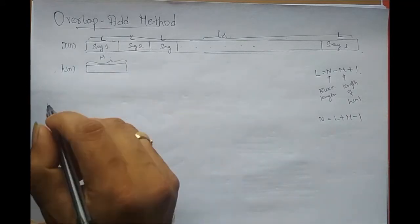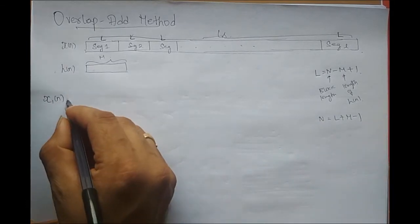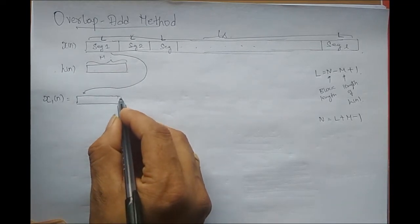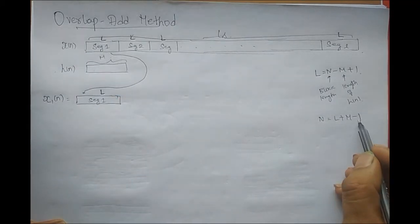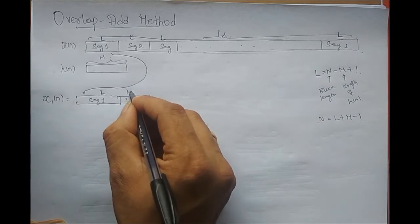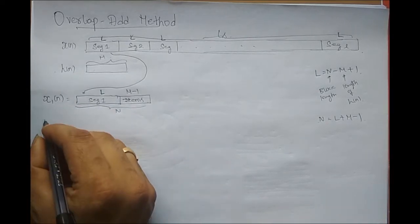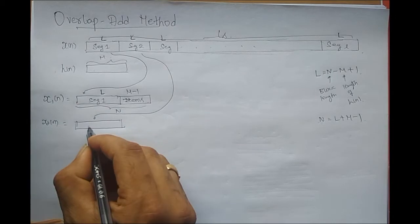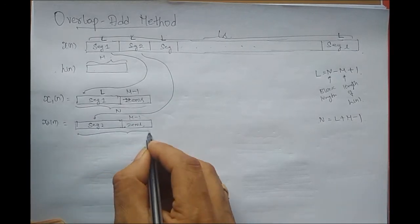I need to convert these individual segments into blocks. We call them X1(n), X2(n), and so on, each of length capital N. The first segment is placed as-is — segment 1 has a length of capital L — and the remaining M minus 1 samples are zero-padded so that the total length is capital N. Similarly, X2(n) is formed the same way: segment 2 is placed at the beginning, and the remaining M minus 1 samples are padded with zeros so the total length is capital N.